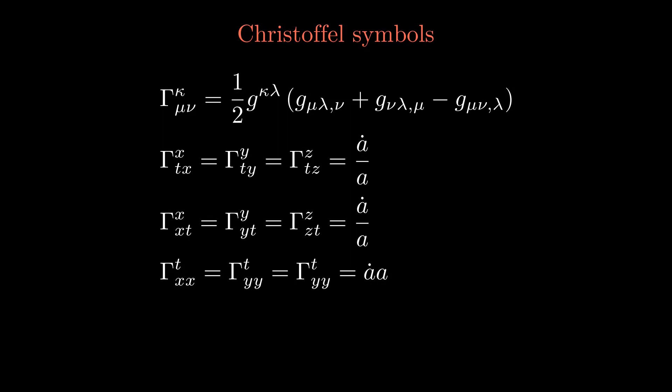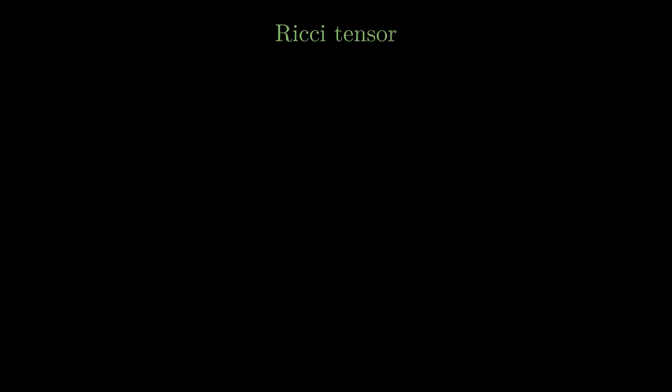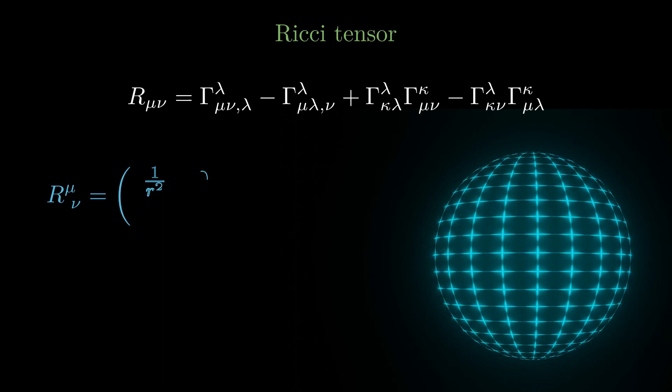The curvature of the spacetime allows to distinguish between gravitational and non-gravitational effects. One important curvature quantity is the Ricci tensor, which is given by a combination of derivatives and products of Christoffel symbols. For the surface of a two-dimensional sphere, the Ricci tensor would only depend on the radius of the sphere. For the expanding universe, the non-vanishing components of the Ricci tensor contain first and second derivatives of the scale factor a.